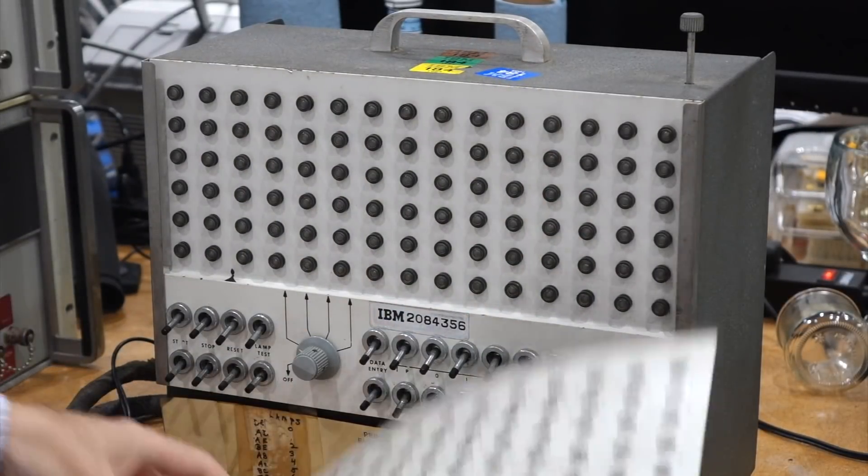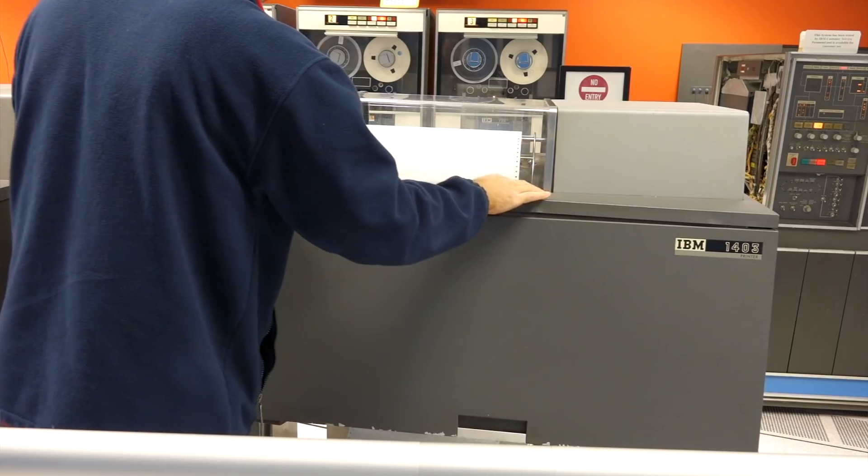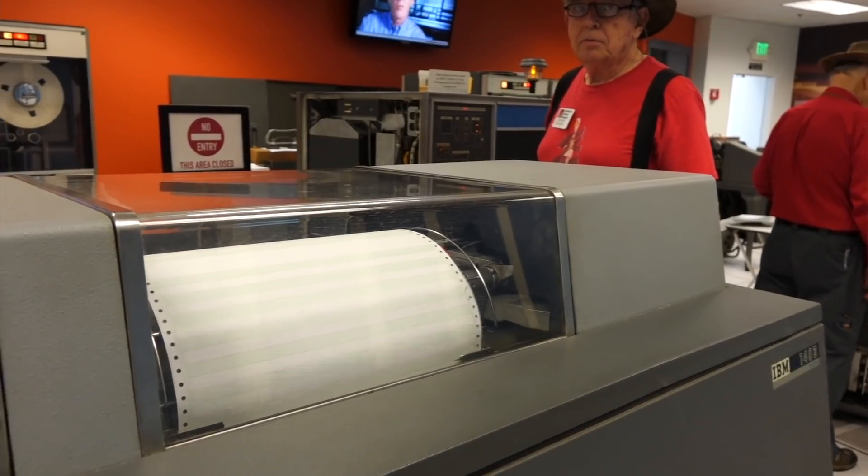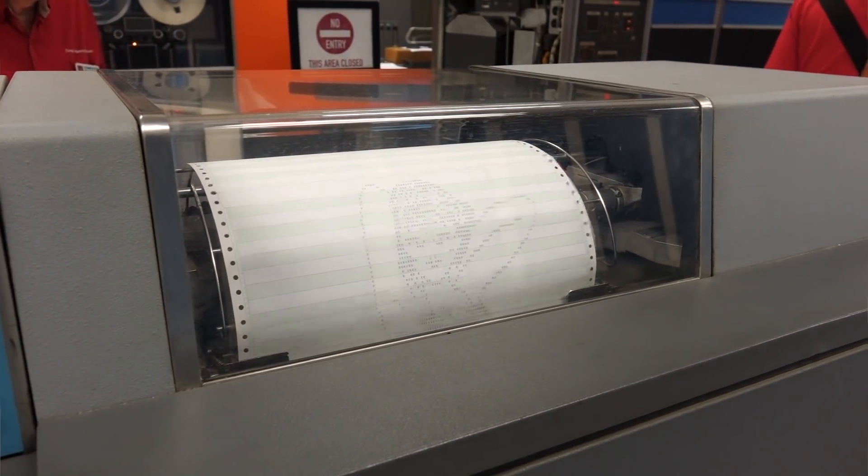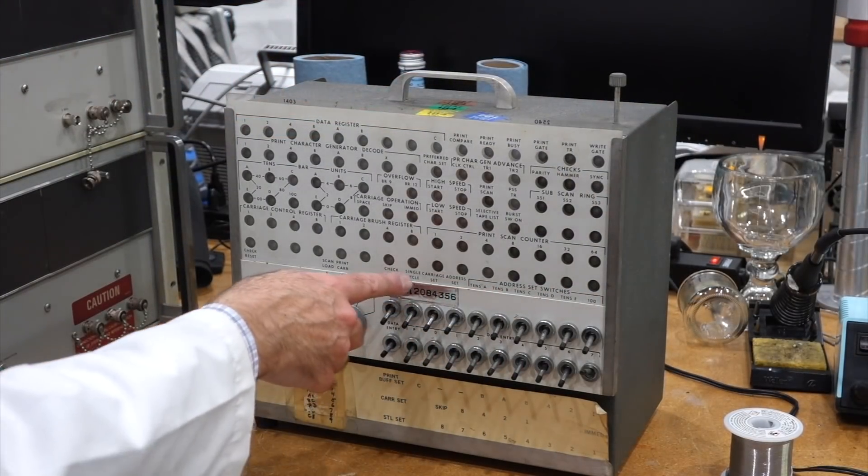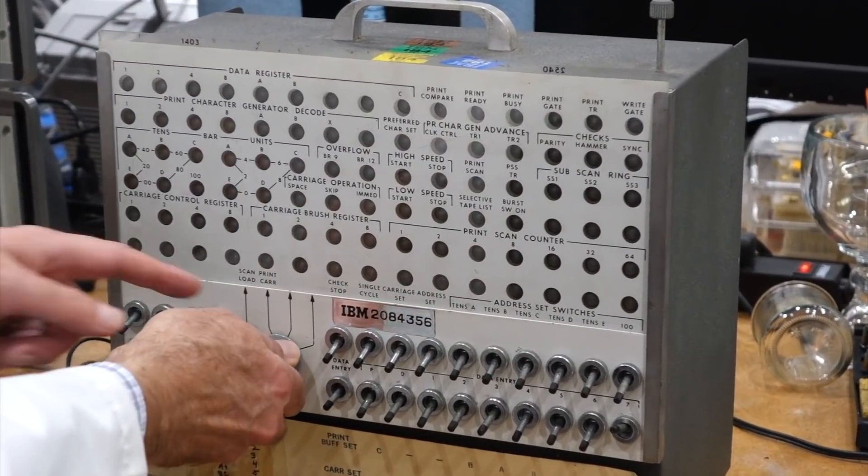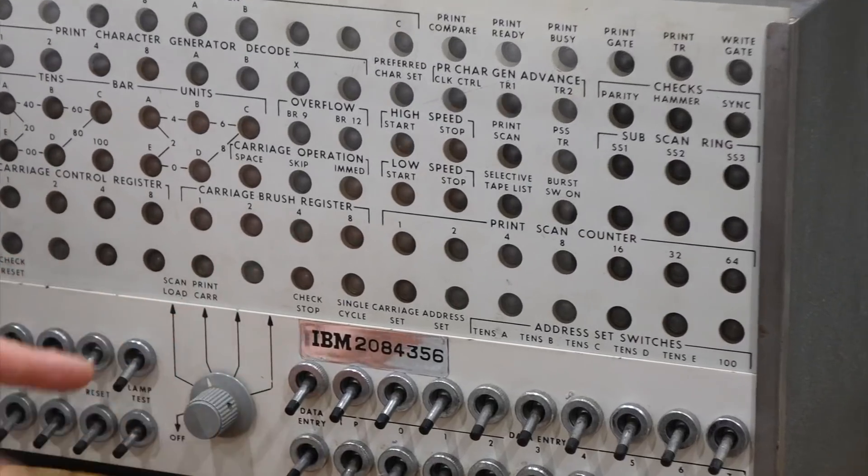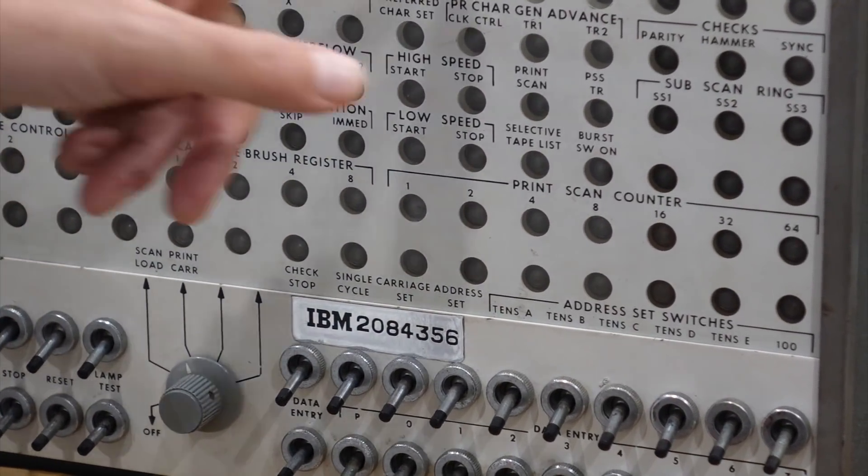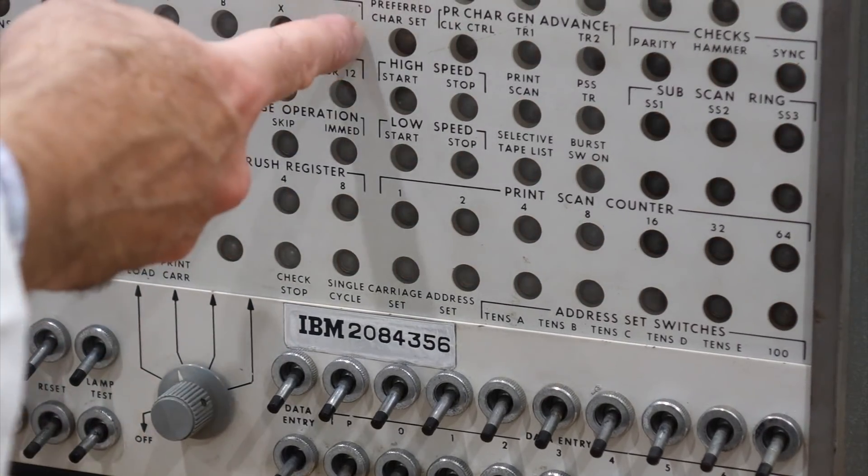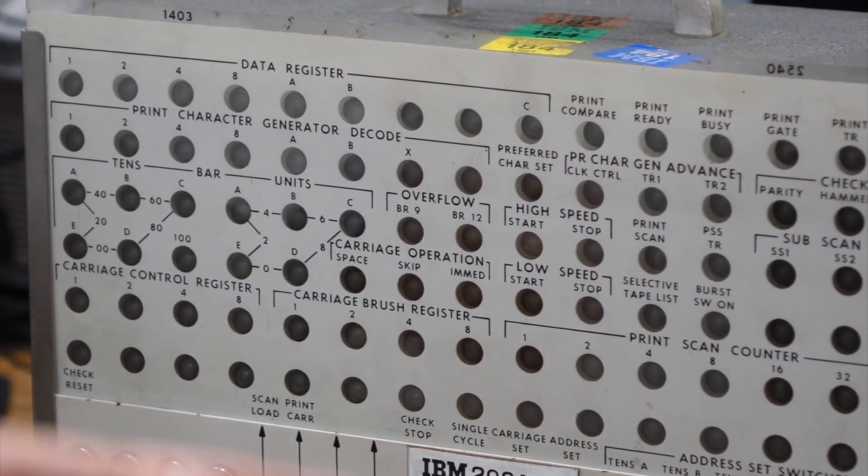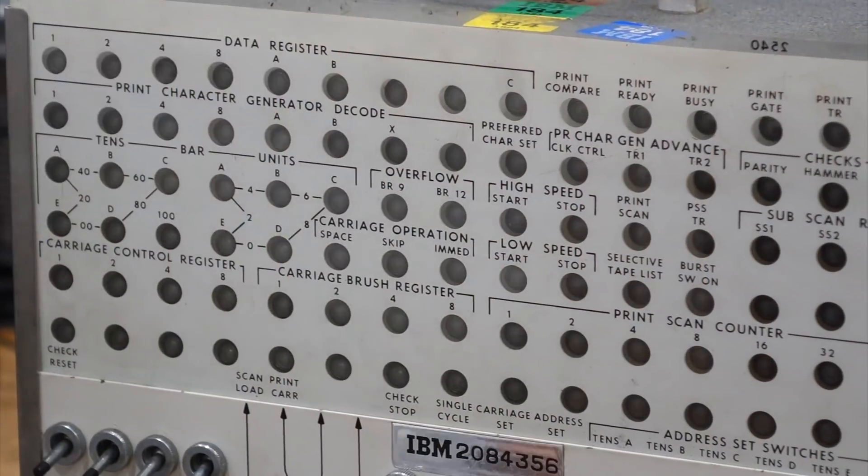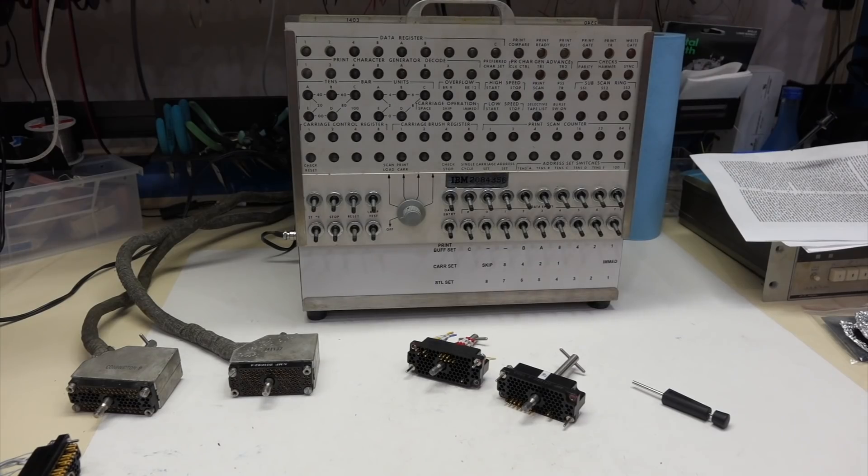And then here we have the 1403 printer. That's the same type of printer that's hooked up to the IBM 1401, but I think this might only work with the N1 version, which we don't have. That's too bad. But this you have a bunch of switches, you can set the address, you can do scan, load, print. You can do a check reset. It shows you the contents of your data register, the character it's decoding to print. As it steps through the 132 columns, you can see all the internal state of the printer and what's going on. So it's all fixed.